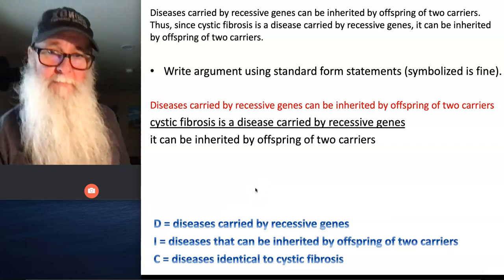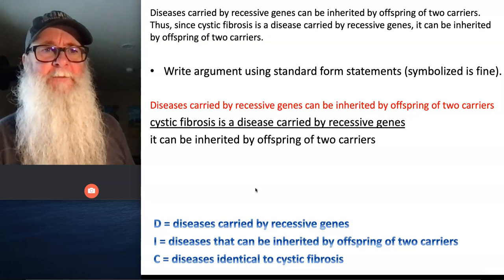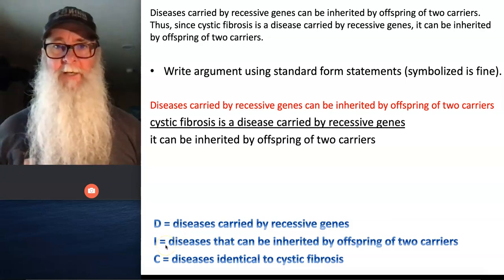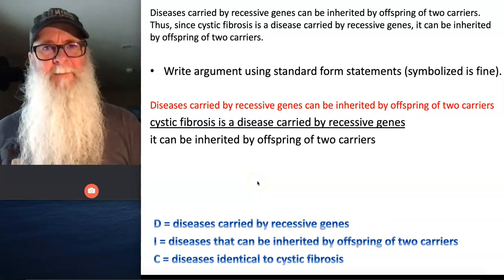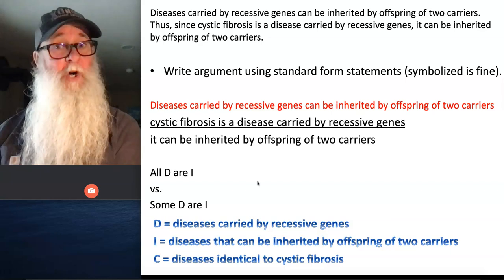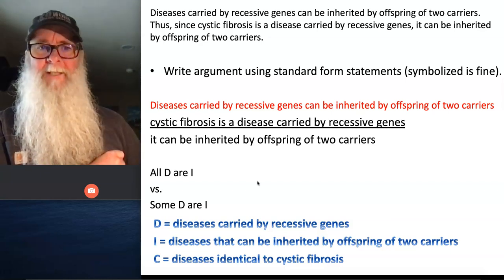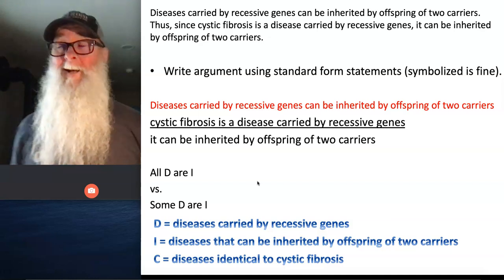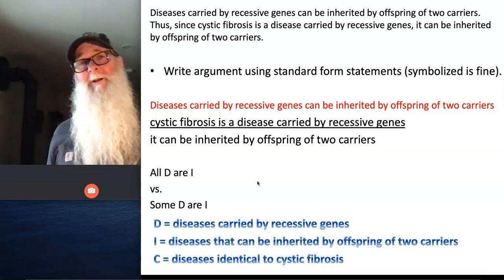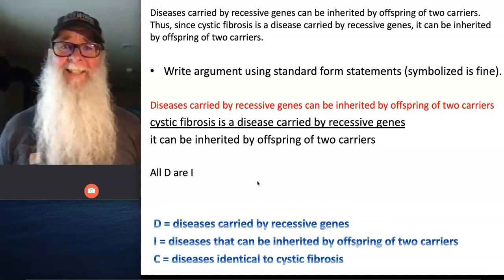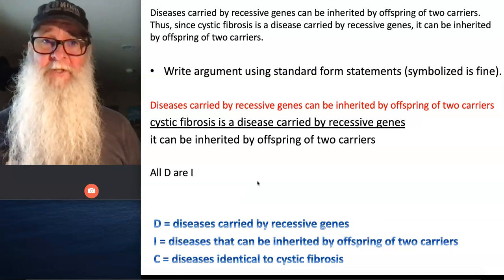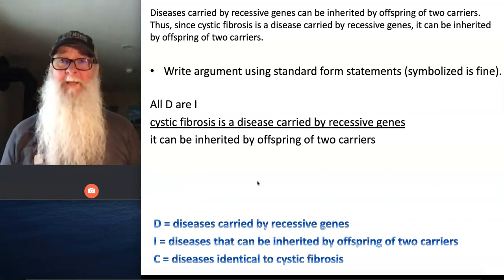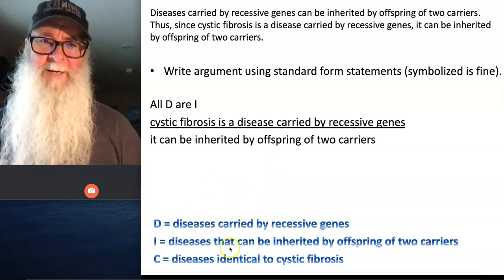When we look at the first premise — 'diseases carried by recessive genes can be inherited by offspring of two carriers' — we see that it's our D term and our I term that are relevant. The question is: is this saying that every disease carried by recessive genes (all D) are diseases that can be inherited by offspring of two carriers, or just some? It turns out this is the case for all diseases carried by recessive genes. So my first premise becomes: All D are I.